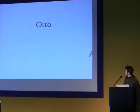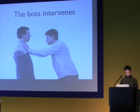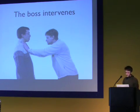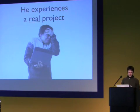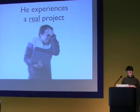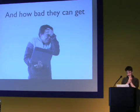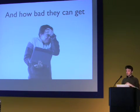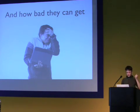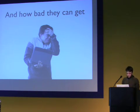But eventually his love runs away from him and his boss intervenes and gives him a real project. Otto experiences what many people have — that's how bad real projects can get. There are two outcomes: Otto can stick with the solution he's creating despite the hostility, or the project fails and Otto leaves the community. One of those is more common than the other.